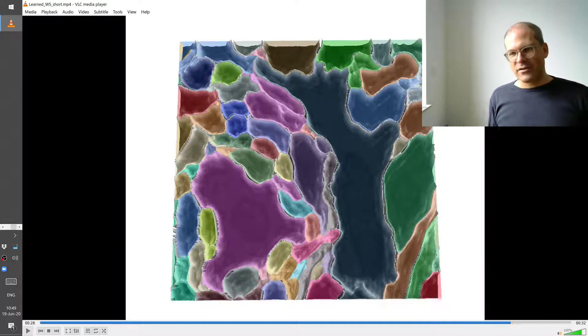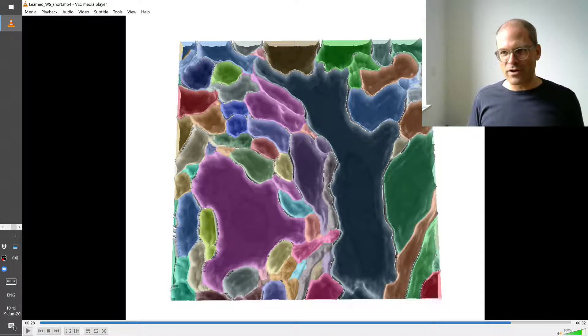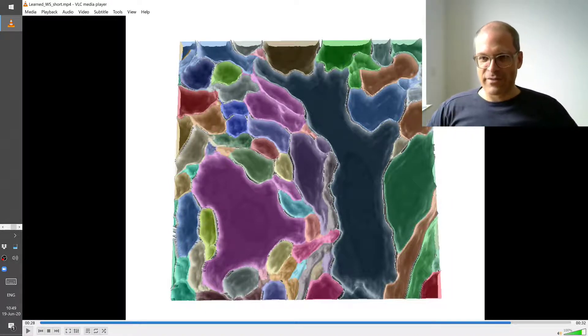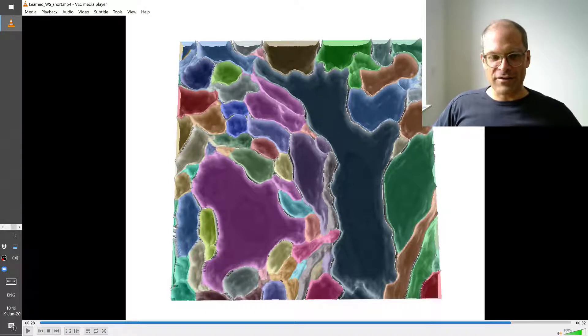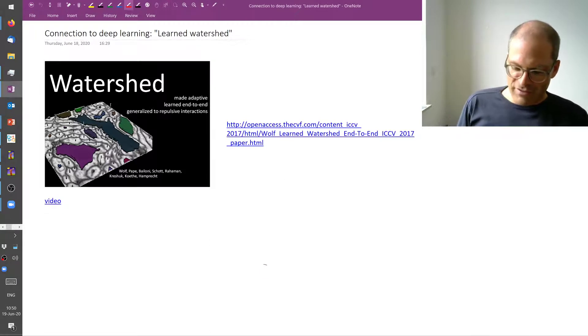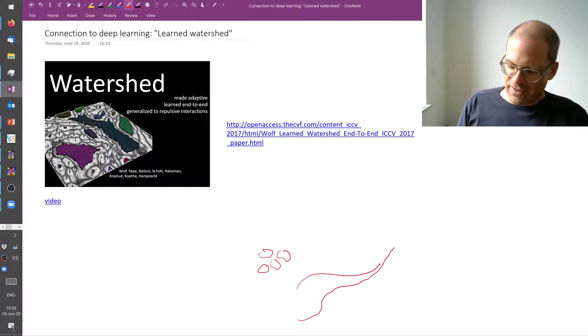The bad thing is, well, it needs seeds. And as you go to huge images, nobody wants to give seeds by hand and finding seeds automatically is a very hard task. So finding seeds automatically is easy when you have small convex objects. But if you have something like a big object, as we have in this neural kind of data, and then it gets very thin.